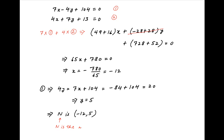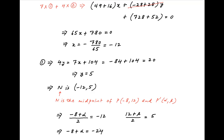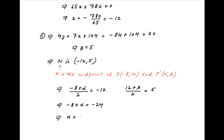Now, recall that N is the midpoint of PP', because both P and P' are equidistant from N. The coordinates of P are (-8, 12) and the coordinates of P' are (alpha, beta). Therefore, (-8 + alpha) / 2 = -12 and (12 + beta) / 2 = 5. The first equation implies -8 + alpha = -24, so alpha = -16. The second equation implies 12 + beta = 10, so beta = -2. Therefore, the coordinates of P', the mirror image, are (-16, -2), which is the required answer.